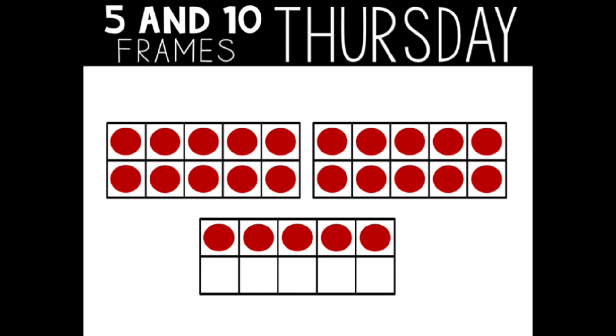I am noticing a pattern. Are you? They added another full 10 frame. So now I have two groups of 10 and five dots in the bottom 10 frame. Two groups of 10 and five more equals 25. What did you do to find your answer?